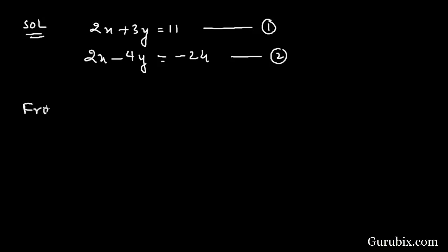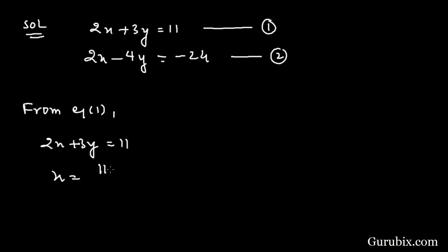We shall start from equation number 1: 2x plus 3y equals to 11. We write the value of x in terms of y, so x equals to 11 minus 3y over 2. Now we shall put this value into equation number 2.